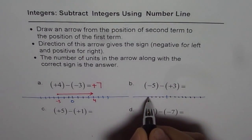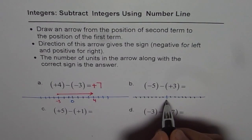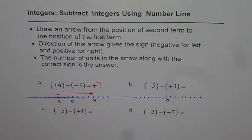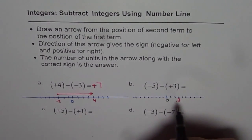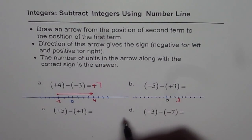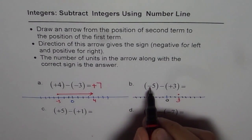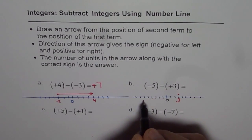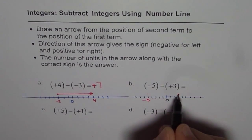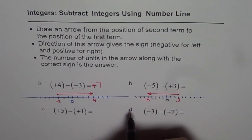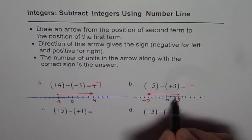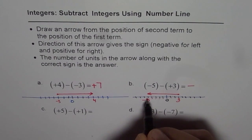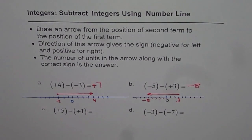So that is our zero. We start with the second number, which is plus three — that is the starting point. We have to take away three from minus five, so we end at minus five: one, two, three, four, five. Draw the arrow from plus three to minus five. The direction is negative — we are going towards the left. Counting the units: one, two, three, four, five, six, seven, eight. So the answer is minus eight.